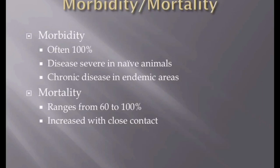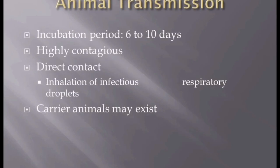Contagious Caprine Pleuropneumonia is severe and highly contagious in naive animals. Morbidity is about 100%. Chronic disease can also be seen in endemic areas where animals may have pre-existing immunity to Mycoplasma Capri pneumonia. Mortality ranges from 60 to 100%. Close confinement increases the spread of disease. The incubation period is often six to ten days, although it is sometimes as long as three to four weeks under natural conditions.